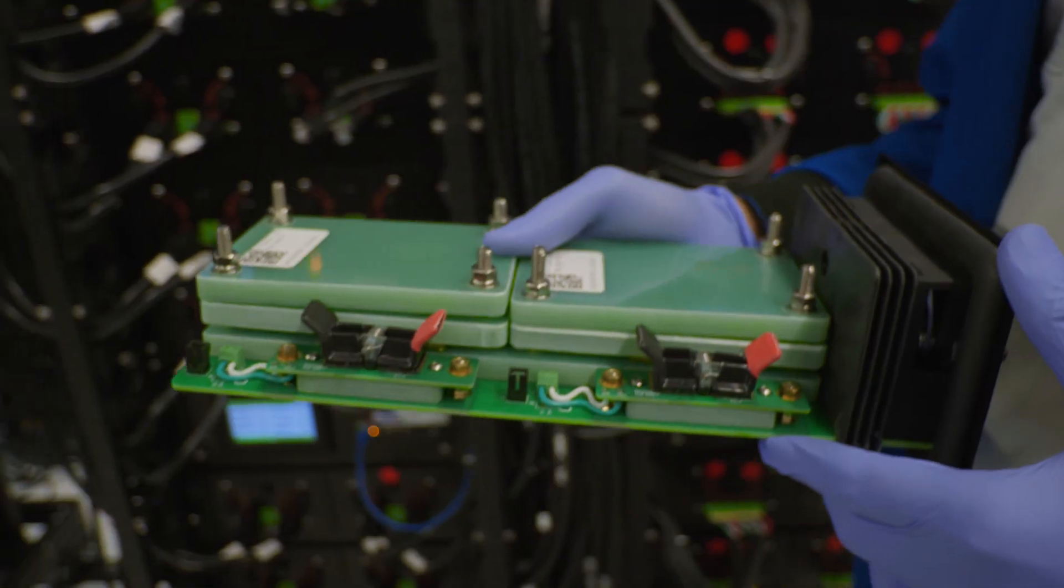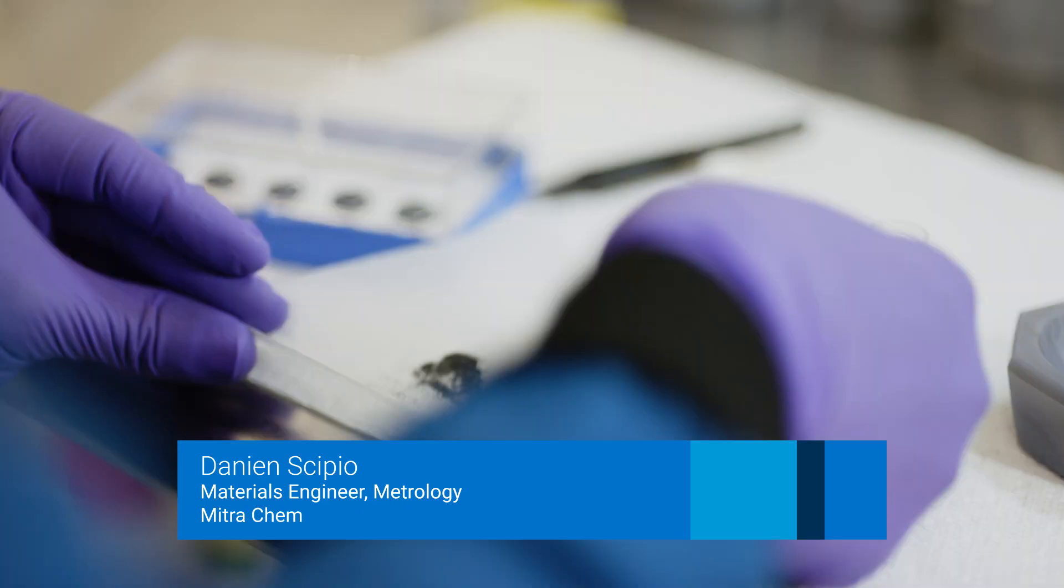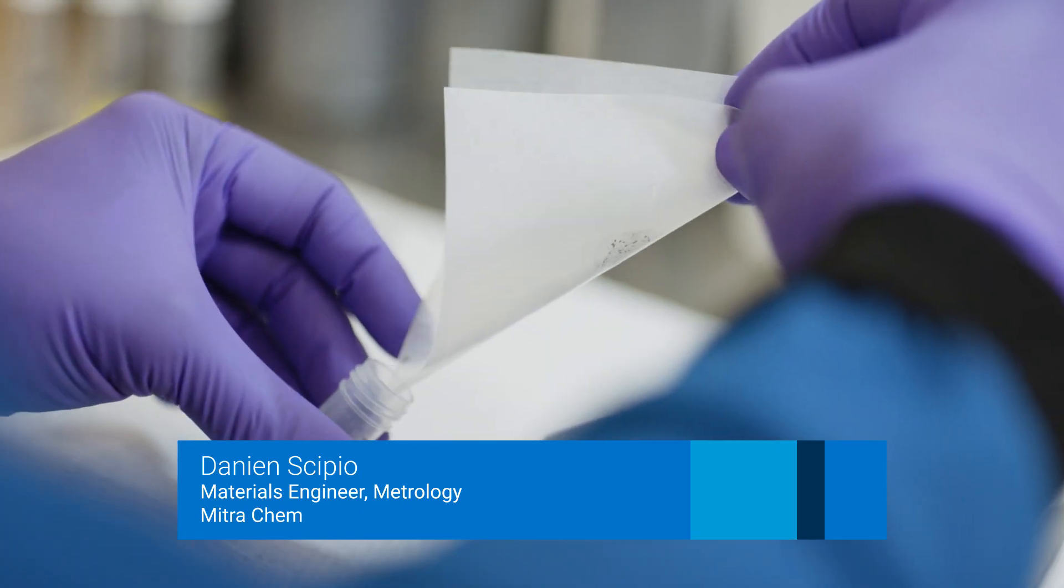It's not simply enough to make battery materials. You also have to see how they perform inside of a battery cell. We really want to find out what's going on with our powders. We want to characterize them to the best of our ability and we get that information from the ICP OES.